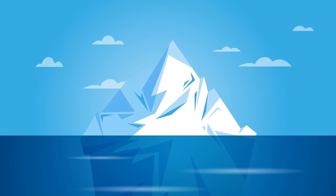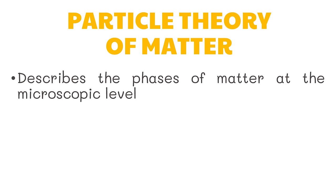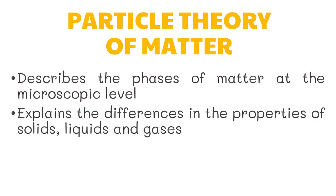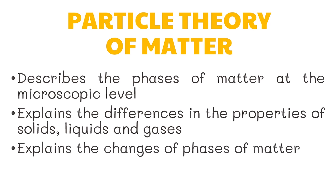Going back to our previous example, the iceberg, ocean water, and the vapor in the sky are all water — so why do they look very different from each other? This observed difference originates from the nature of water particles. The particle theory of matter describes the phases of matter at the microscopic level. It also explains the differences in the properties of solids, liquids, and gases, and moreover explains the changes of phases of matter.